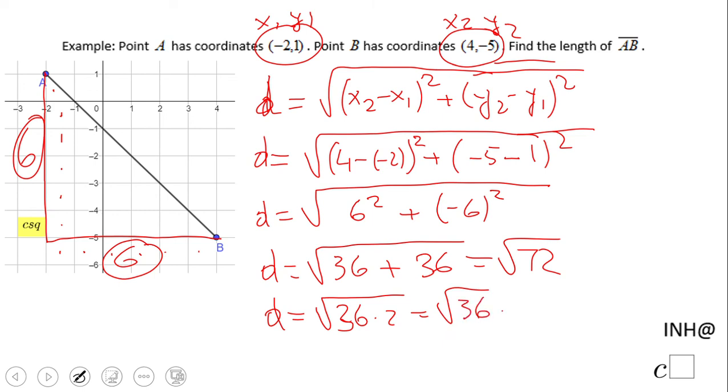We can break the radical apart and we end up with the radical form: 6 square root of 2.